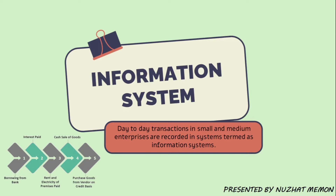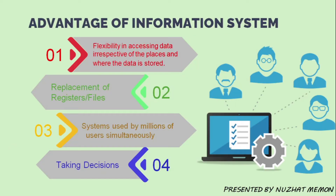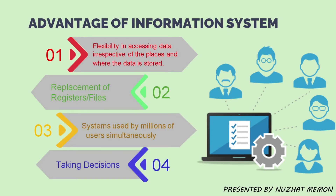Even YouTube itself is an information system — it collects knowledge from people all around the world in the form of videos, processes it, stores it in a database, and when somebody searches with keywords such as 'database' or 'DBMS', YouTube suggests this video to the intended users. The first advantage of information systems is flexibility in accessing data irrespective of the place you are at and where the data is stored — for example, accessing train inquiry details from home instead of going to a railway counter.